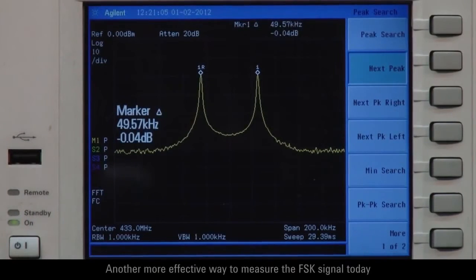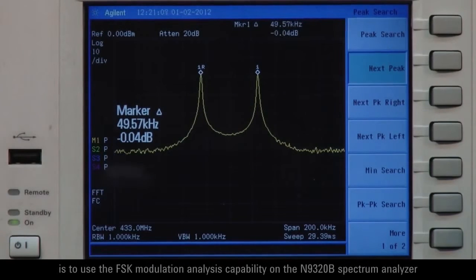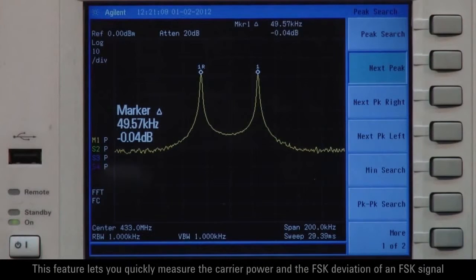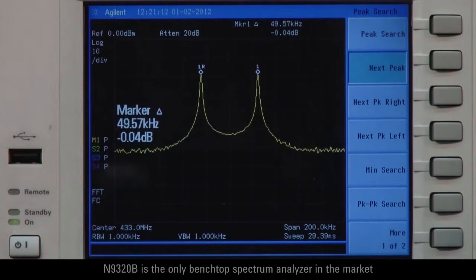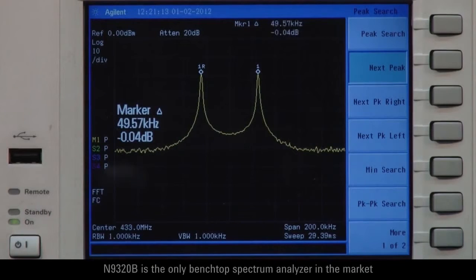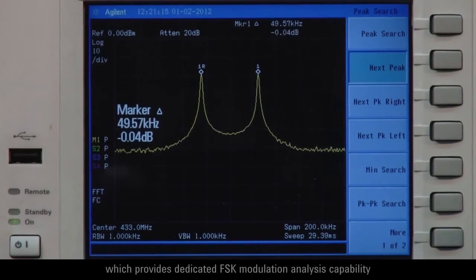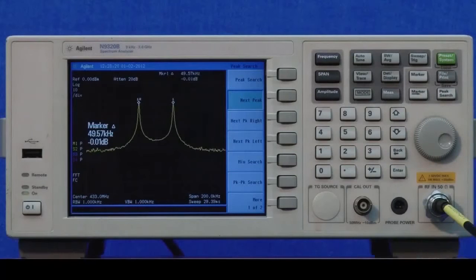Another more effective way to measure the FSK signal today is to use the FSK modulation analysis capability on the N9320B spectrum analyzer. This feature lets you quickly measure the carrier power and the FSK deviation of an FSK signal. N9320B is the only benchtop spectrum analyzer in the market which provides dedicated FSK modulation analysis capability. It is easy to do this in 4 steps.